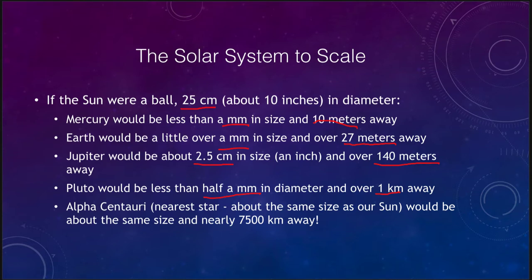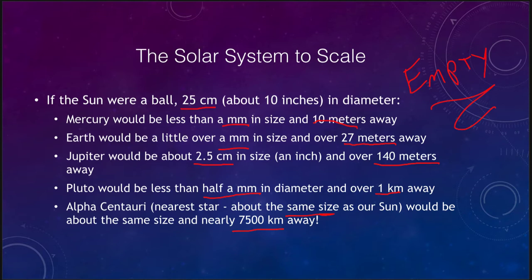On this same scale, the nearest star, Alpha Centauri — about the same size as our Sun — would be about 7,500 kilometers away. Space is very empty. Pictures where you see the Sun and planets looking close together are not realistic representations of what the solar system is actually like.